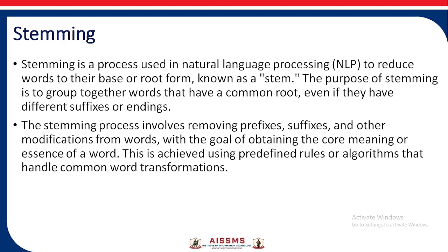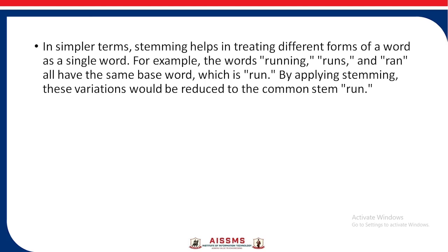Stemming is a process used in natural language processing to reduce a word to its base or root form, known as a stem. The purpose of stemming is to group together words that have a common root, even if they have different suffixes or endings. The stemming process involves removing prefixes, suffixes, and other modifications from words, with the goal of obtaining the core meaning or the essence of a word. This is achieved using predefined rules or algorithms that handle common word transformations. In simpler terms, stemming helps in treating different forms of a word as a single word.